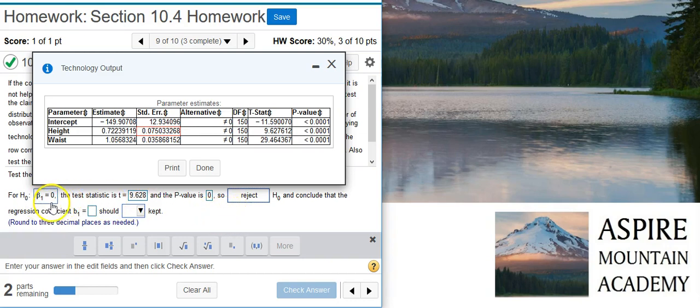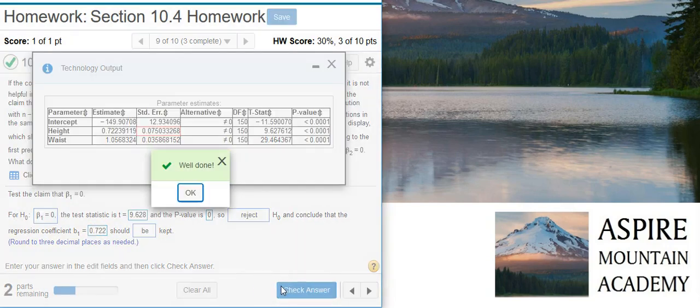If we're rejecting the null hypothesis, then that says that beta 1 is not equal to 0. And so that means we're just going to keep the value that we see here listed in the table from our regression equation. So I'm just going to put that value in here and say that it should be kept. Well done!